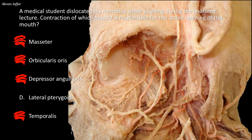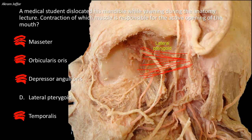The lateral pterygoid is located in the infratemporal fossa. It has been removed in this dissection, but I will reconstruct it. It has two heads: an inferior head from the lateral surface of the lateral pterygoid plate, and a superior head from the infratemporal surface of the greater wing of the sphenoid. The fibers of the two heads run almost backwards to be inserted into the neck of the mandible and the intraarticular disc of the temporomandibular joint.